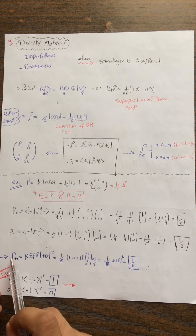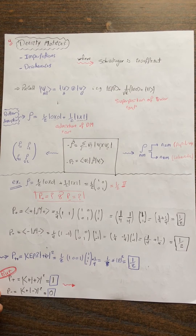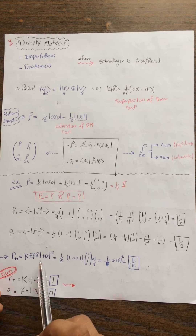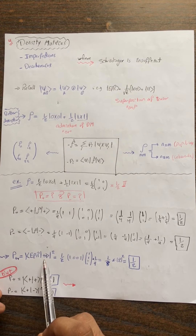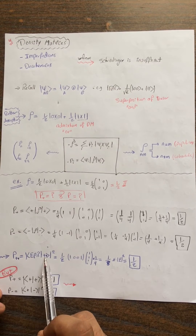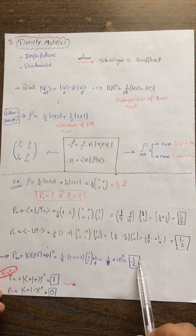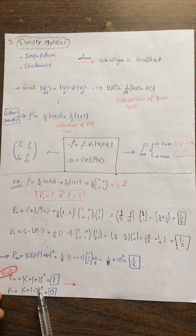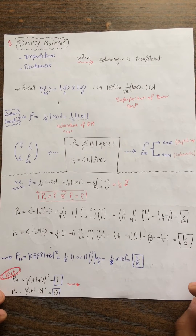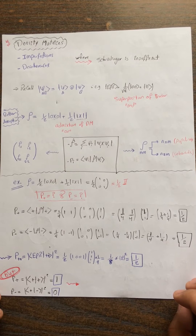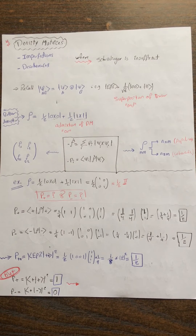If you would like to measure using the superposition of the EPR state and you would like to get the outcome of two pluses, this is also one half. So the measurement outcomes for the superposition state in the |+⟩ basis confirm this result.